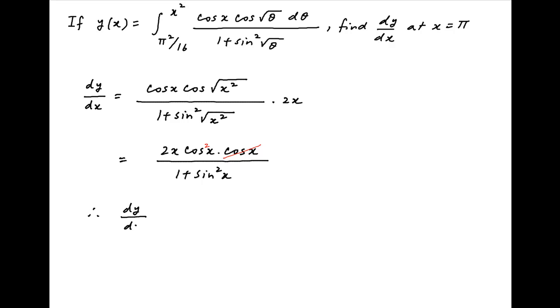Putting x is equal to π, the value of dy upon dx at x is equal to π is equal to 2π times cos squared π divided by 1 plus sine squared π.